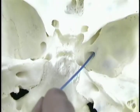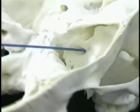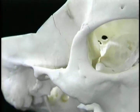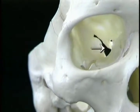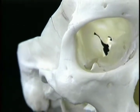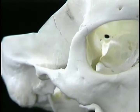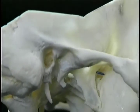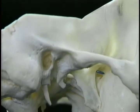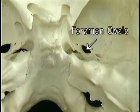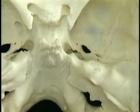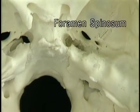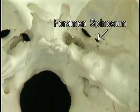Below and behind the medial end of the superior orbital fissure, this smaller round opening — the foramen rotundum — is for the maxillary branch of the trigeminal nerve. The foramen rotundum emerges not into the orbit but into the pterygomaxillary fissure. The two openings that pass downward are the foramen ovale, for the mandibular branch of the trigeminal nerve, and just behind and lateral to it, the foramen spinosum, for the middle meningeal artery.